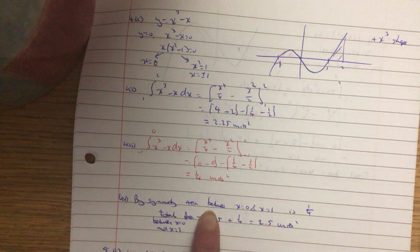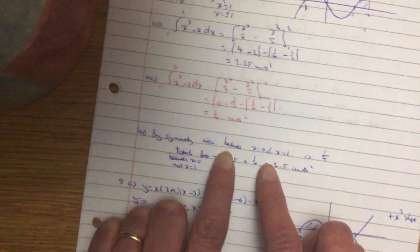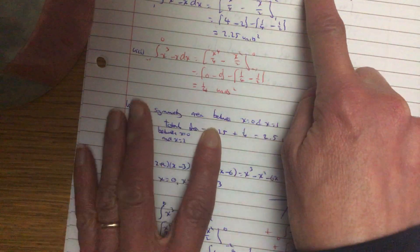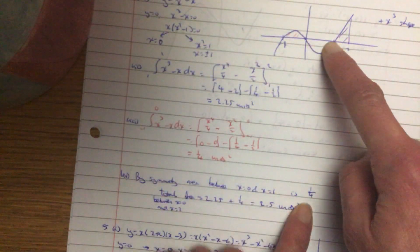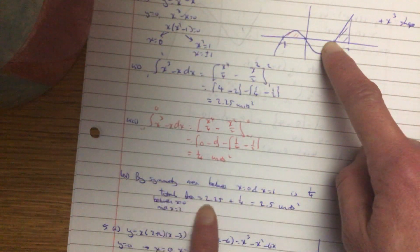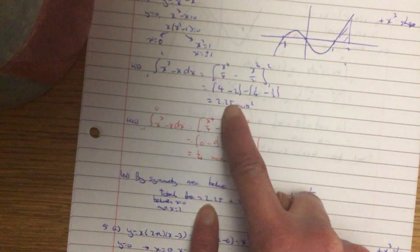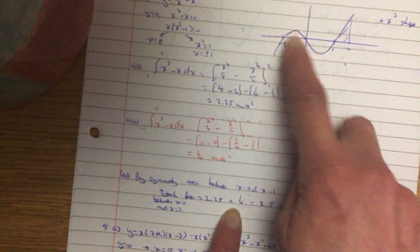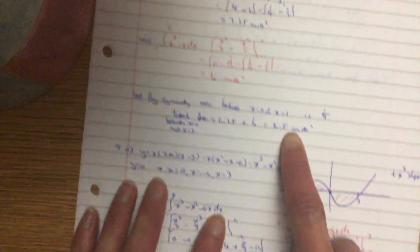And part 4. From your answers, what can you say? So if you look, it is by symmetry, the area between x is 0 and 1 is a quarter. The total area is the blue area plus your quarter in there. It's symmetrical. Equals 2.5.